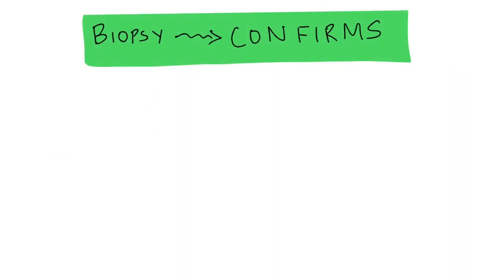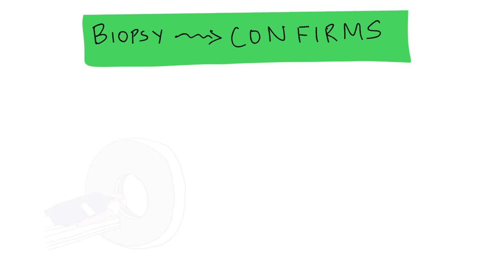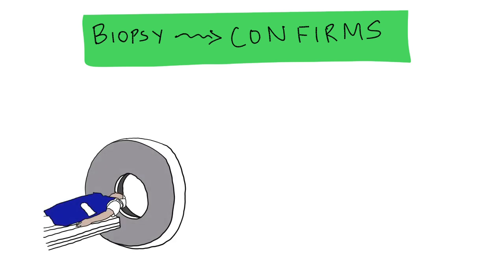Once biopsy confirms our diagnosis of Marjolin's ulcer, we need to go ahead with imaging. This can either be a CT scan or an MRI scan.